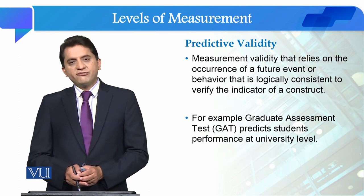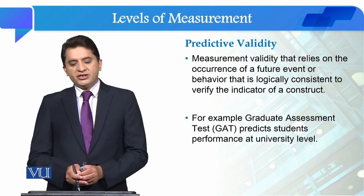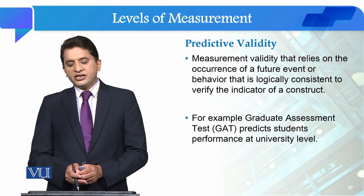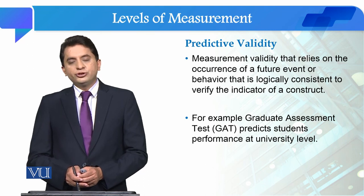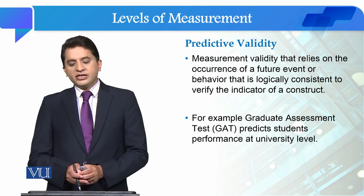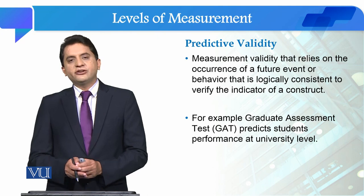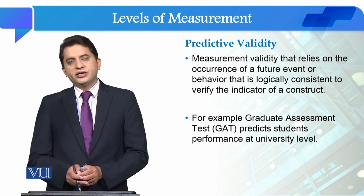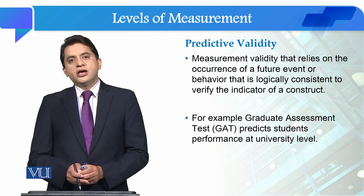Predictive validity is a type of measurement validity that relies on the occurrence of a future event or behavior that is logically consistent to verify the indicator of a construct.